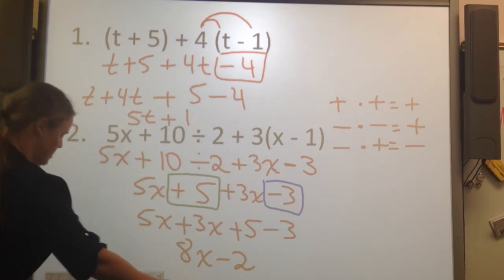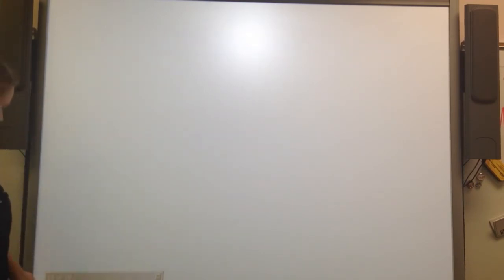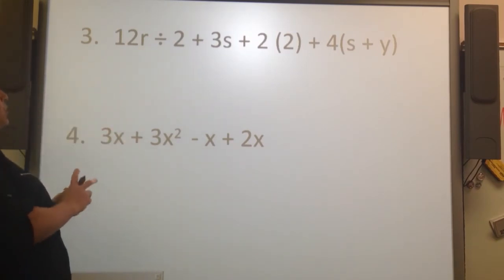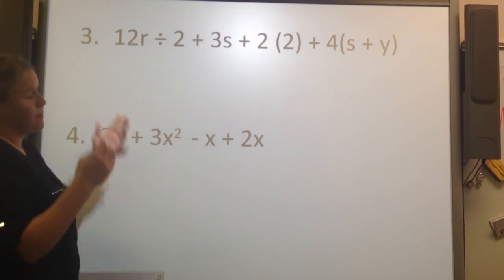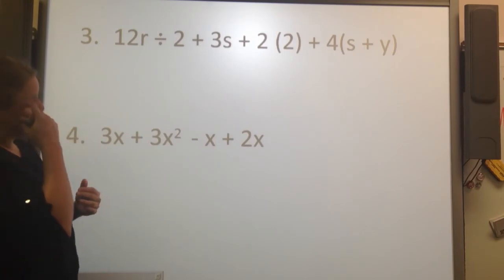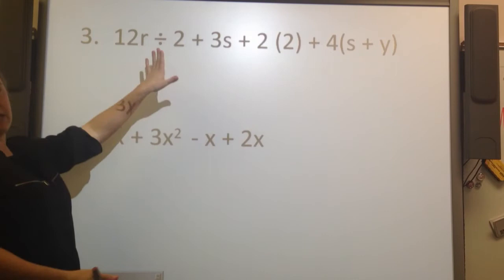Next one. So we've got some more expressions. So 12r divided by 2 plus 3s plus 2 times 2, not power of 2, times 2, plus 4 times s plus y. So a lot going on here. Go slow, go with me if you want.